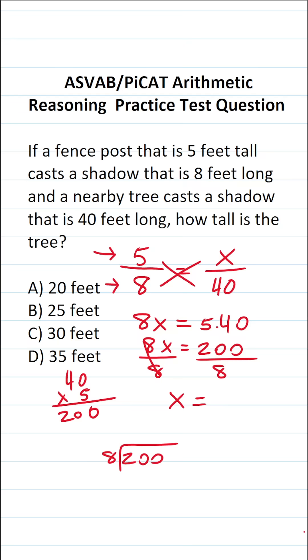8 doesn't go into 2. 8 goes into 20, 2 times without going over. 8 times 2 is 16. 20 minus 16 is 4. Drop down this 0. 8 times 5 is exactly 40 with no remainder.